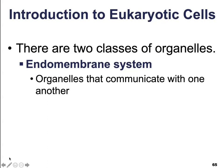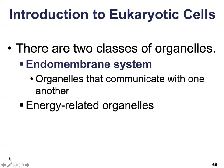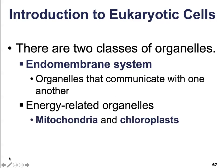Then there are going to be the energy-related organelles. The energy-related organelles are responsible for producing energy — things like mitochondria and chloroplasts. These are going to be independent of the endomembrane system and are self-sufficient; they can carry out their job whether or not they are receiving any information from the endomembrane system. That's going to be it for our introduction into eukaryotic cells. Please let me know if you have any questions.